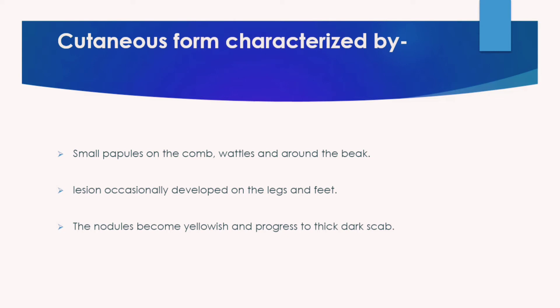The cutaneous form is characterized by small papules on the comb, wattles, and around the beak. Lesions occasionally develop on the legs and feet. Nodules are formed in the cutaneous form and over time become yellowish, then progress to form thick dark scabs.